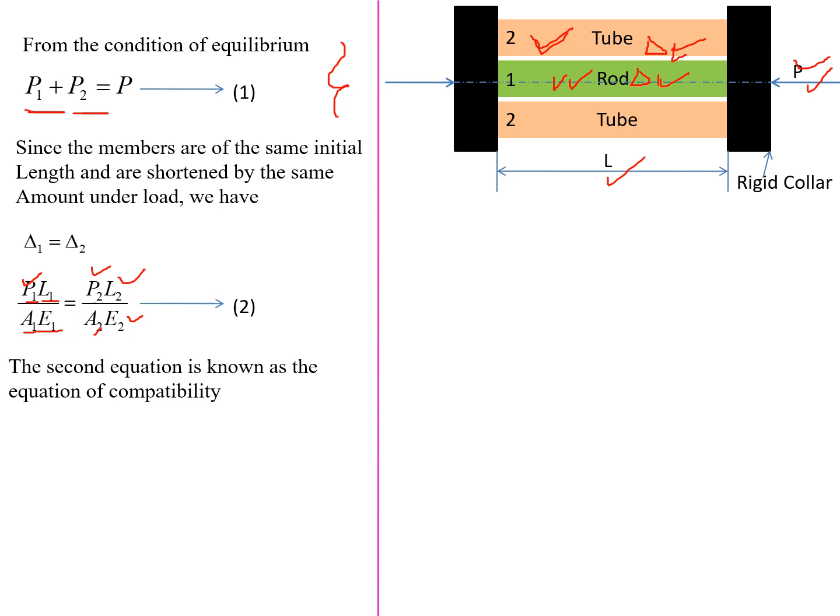Equation 2 is known as the equation of compatibility. When solving problems on the composite bar, we must remember two equations: first, the condition of equilibrium — P1 + P2 = P; and second, the equation of compatibility — delta 1 = delta 2, which expands to P1·L1/(A1·E1) = P2·L2/(A2·E2).